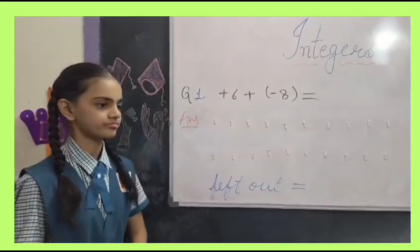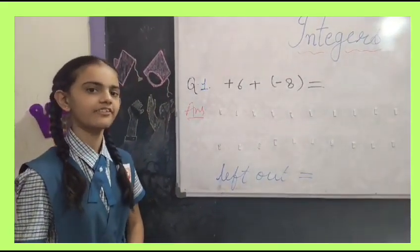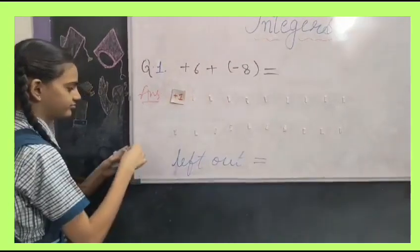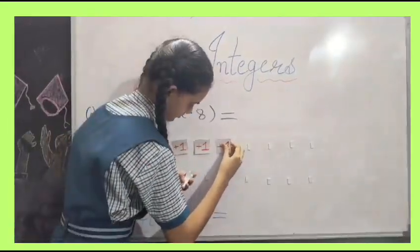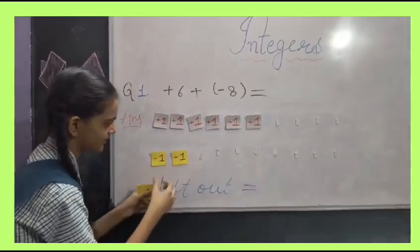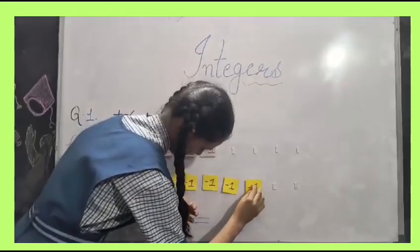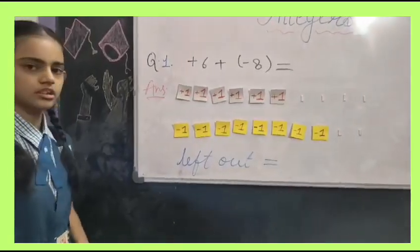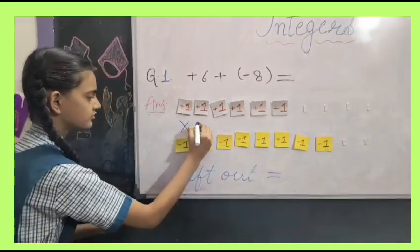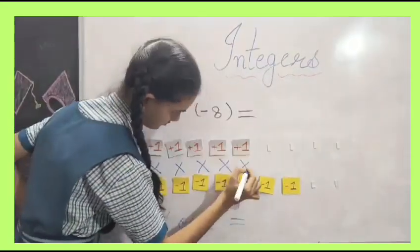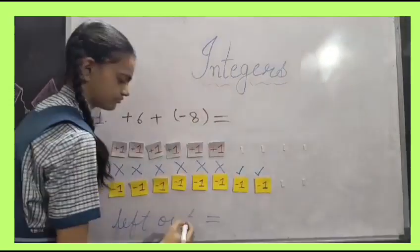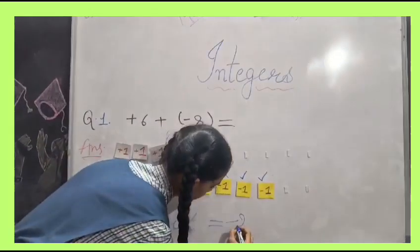Here it has plus 6. So we will paste 6 positive squares. Ok students, let's paste them in quickly. Now we will paste 8 negative squares. Here we can see 6 squares will be cancelled out. Now we are left with 2 negative squares. So the answer will be minus 2.